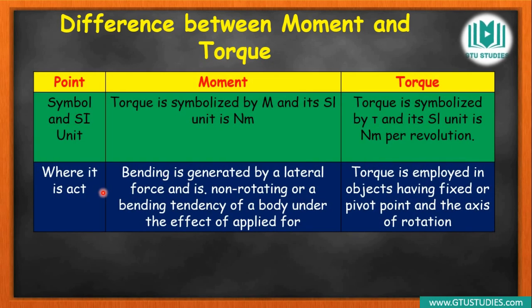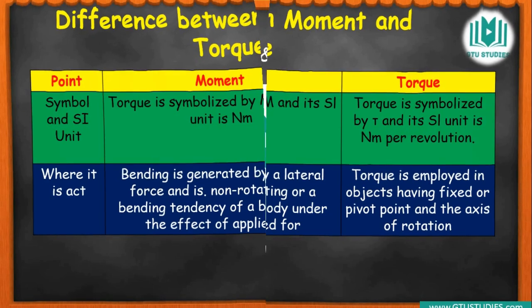Fifth difference: bending moment acts on non-rotating parts. Bending is generated by a lateral force and is a non-rotating or bending tendency. Torque occurs where a body is rotating — wherever a body rotates, torque is present. Moment acts on a body that only moves (translates) but does not rotate. This is the clear-cut difference to remember.